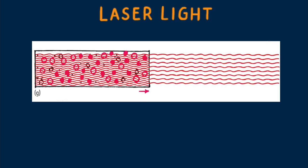Some photons leak out of one of the mirrors, which is only partially reflecting. These photons make up the laser beam.